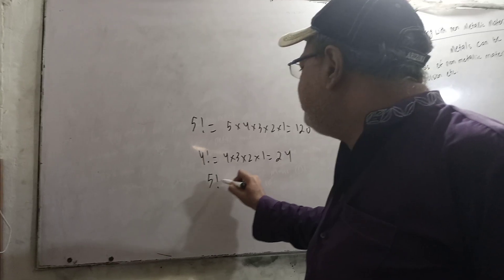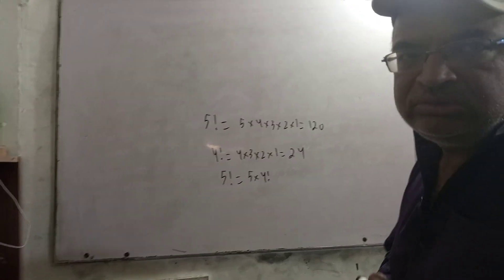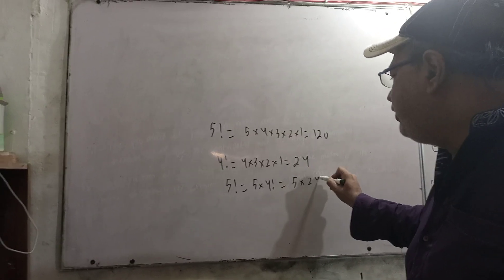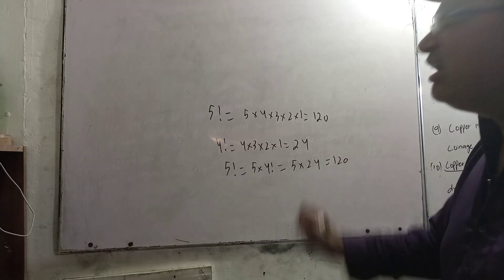Now, if you want to remove the factorial, then you can do 5×4 factorial. 5×4 factorial equals 5×24. If you multiply, 120 will come. This is the answer.